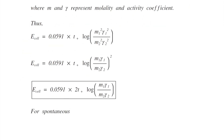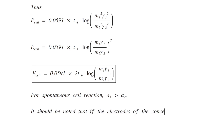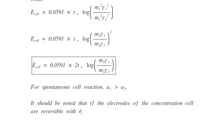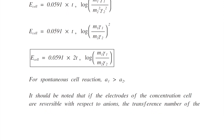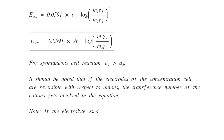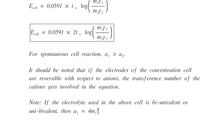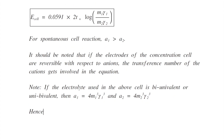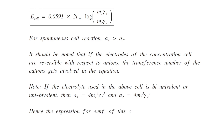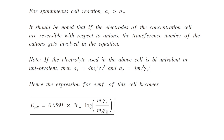For a spontaneous cell reaction, A1 must be greater than A2. It should be noted that if the electrodes of the concentration cell are reversible with respect to an anion, the transference number of the cation gets involved in the equation. For a bi-univalent or uni-bivalent electrolyte, A1 = 4M1³γ1³ and A2 = 4M2³γ2³. Hence the EMF expression becomes E_cell = 0.0591 × 3T+ × log(M1γ1/M2γ2).